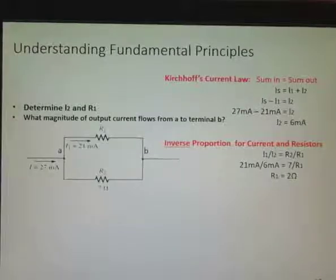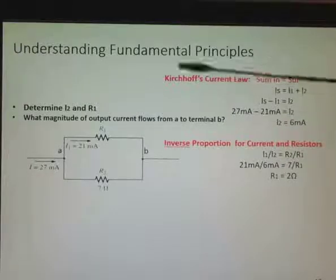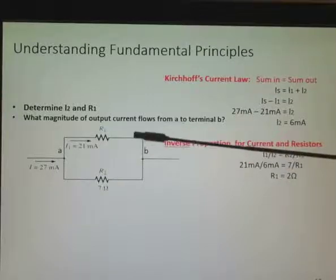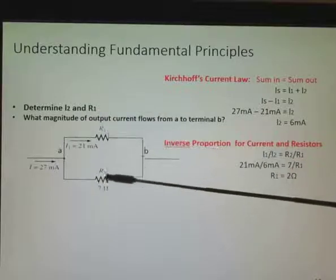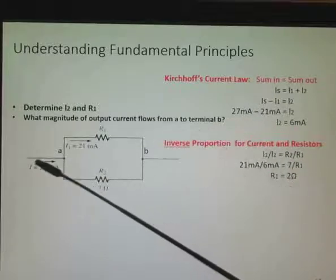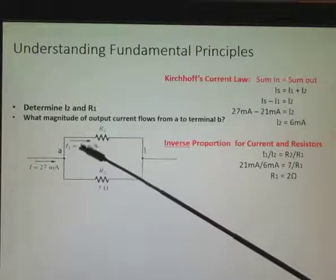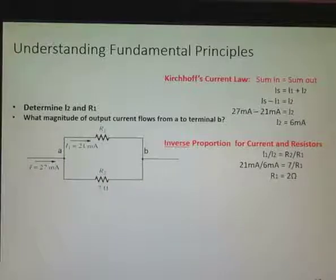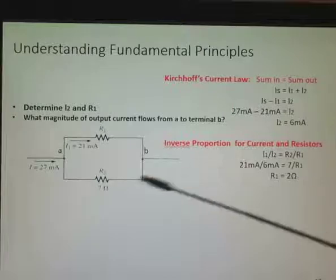Now here, I'm going to look at Kirchhoff's current law, plus we're going to introduce the inverse proportion for current resistors. So pay attention to this. This is the fundamentals of electrical engineering here. So I want to determine I1 and R1. So R1 is not given and I2 is not given. So I want to find I2 and R1. And also, what magnitude of current flows from A to B? So I know if I have 27 milliamps coming in, I need to have 27 milliamps coming out. So 27 minus 21 will give me the 6 milliamps here. So that's this area here, the Kirchhoff's current law. The sum in equals the sum out. The source current equals I1 plus I2, and I end up with 6 milliamps on I2.